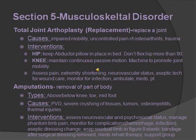Total joint arthroplasty is basically replacing a joint — hip, knee, etc. Indications include impaired mobility, uncontrolled pain related to osteoarthritis, and trauma. For a hip replacement, keep an abductor pillow in place in bed and do not flex the hip more than 90 degrees — don't bend at the waist. A memory tip: think 'ab' like your abs being far away, so you want an abductor pillow. For a knee replacement, maintain continuous passive motion using a machine to promote joint mobility. For both: assess pain, extremity shortening, neurovascular status, use aseptic technique for wound care, monitor for infection, ambulate the day of surgery, give pain medication, and PT will follow.